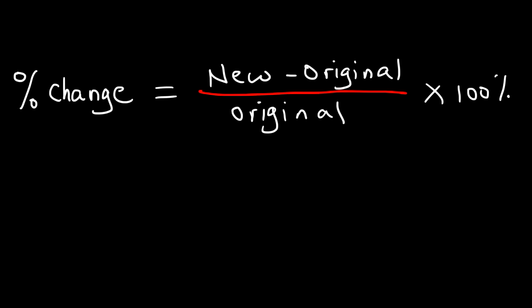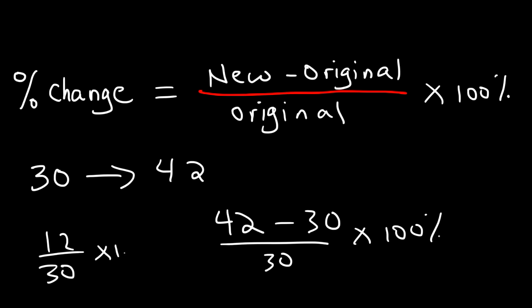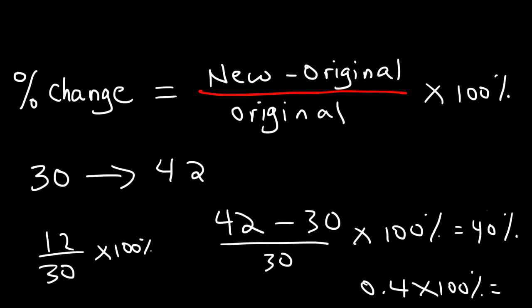For example, let's say if a number changes from 30 to 42. What is the percent change? The new value is 42, the original value is 30, divided by the original times 100. So subtract these two numbers: 42 minus 30 is 12. And if you divide 12 by 30, that will give you 0.4. 0.4 times 100% is 40%. Notice that this is positive 40%, so because it's positive, it represents a percent increase.